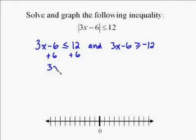When you solve the two inequalities separately, they're solved very similarly. In this case, we added six to get rid of the negative six, gave us 3x less than or equal to 18. Then we have to divide both sides by three to get x less than or equal to six.